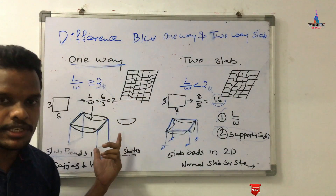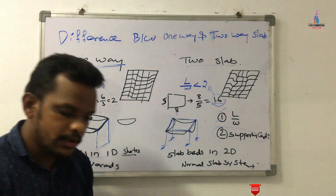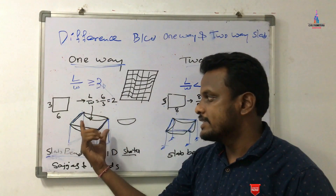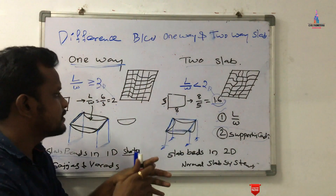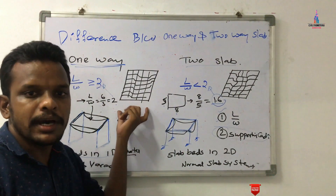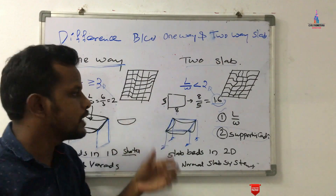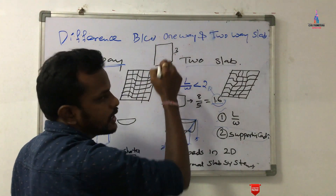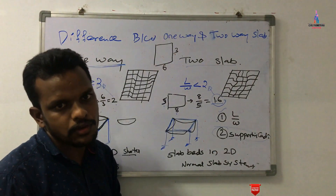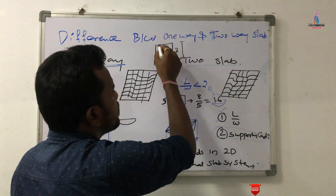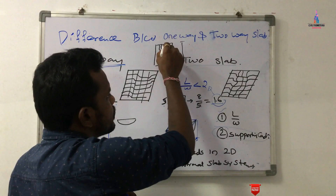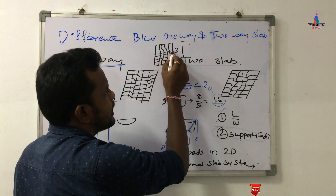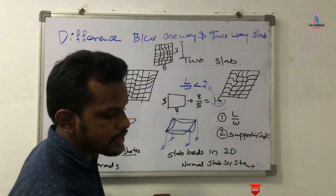Now I will explain how to provide reinforcement for one-way and two-way slab systems. For a one-way slab system with length 6 meters and width 3 meters, we need to provide main reinforcement as cranked bars along the shorter span of 3 meters, and the longer span has straight distribution reinforcement bars only.